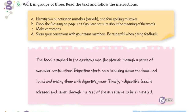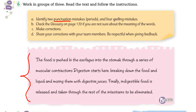Activity number six: working in groups of three, read the text and follow the instructions. Letter A: identify two punctuation mistakes — periods — and four spelling mistakes. Entonces identifican dos errores de puntuación, ya sea que la puntuación es incorrecta o que falta. Si falta, pues ustedes la ponen; si está incorrecta, quitan ese punto y lo ponen donde tendría que ir. Y en four spelling mistakes — errores de ortografía — las identifican y las corrigen.